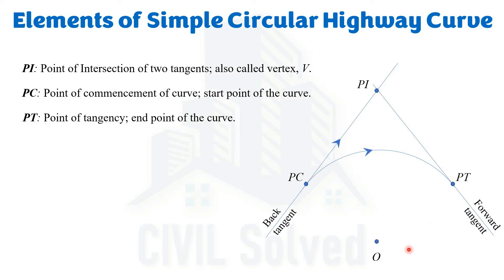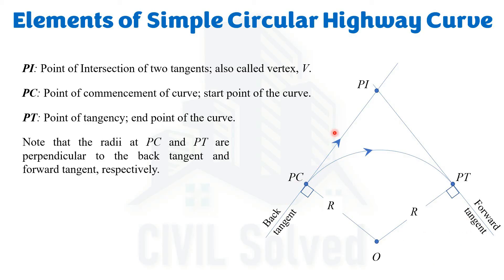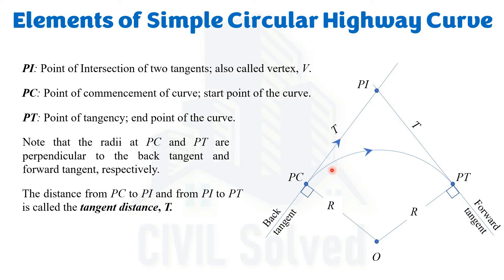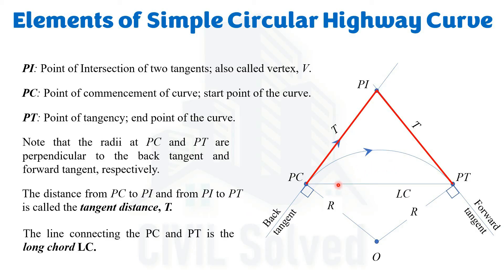Since this is a part of a circle, the circle has a center O. The distance from O to any point on the curve is the radius R, shown here as the distance from O to PC and from O to PT. From the basics of geometry, the radius and the tangents — whether back tangent or forward tangent — make an angle of 90 degrees; they are perpendicular to each other. The distance from PC to PI, or from PT to PI, is named the tangent length.